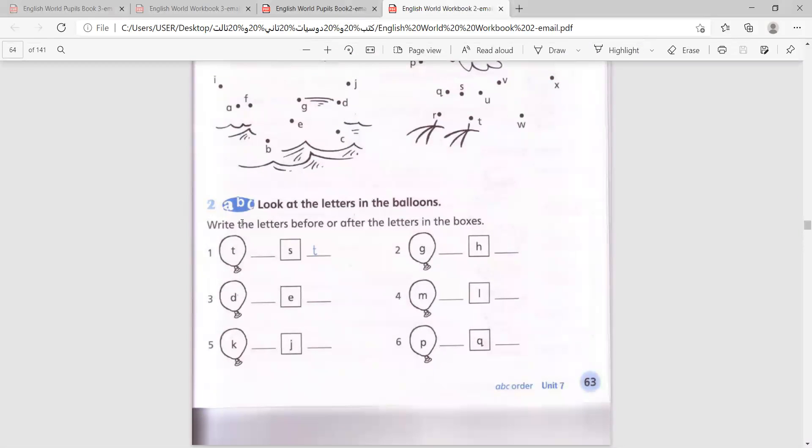Look at the letters in the balloons. Write the letters before or after the letters in the boxes. So you have two letters, one is in the balloon and one is in the box. You will read the alphabet in your mind and decide where to put the letter before or after the letter in the box.